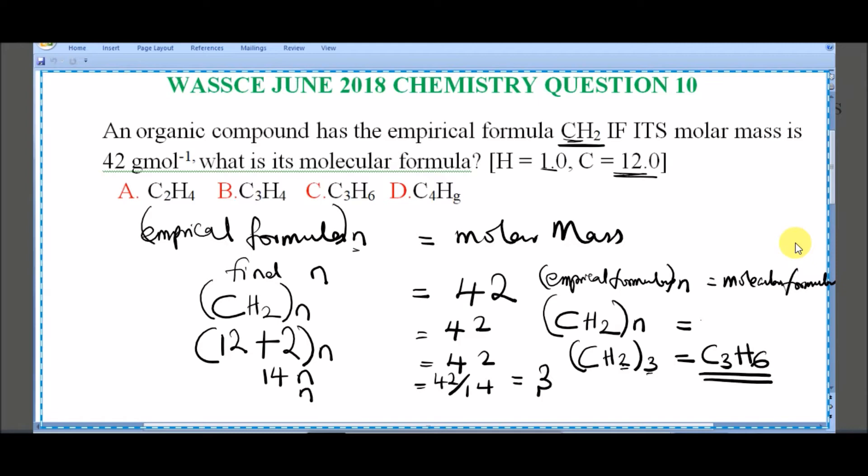C3H6. Because you are multiplying these 3 here, getting it into here, it will give you C3. Then 3 times 2 here will give you 6. So this is the molecular formula. And this makes option C the correct answer.